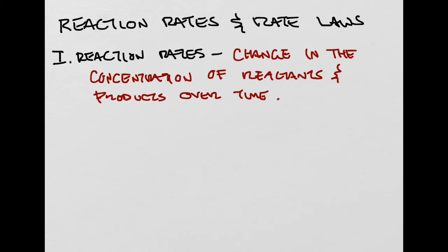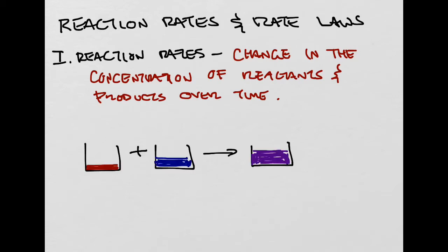Imagine this very simple reaction where we have one reactant and another reactant which come together to form a third product. There's going to be a rate at which the stuff in this beaker is consumed, a rate at which the stuff in this other beaker is consumed, and a rate at which this product is actually formed.